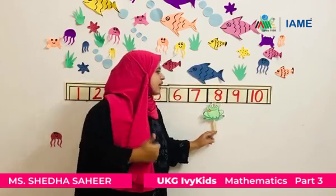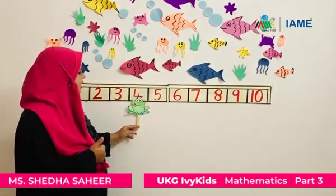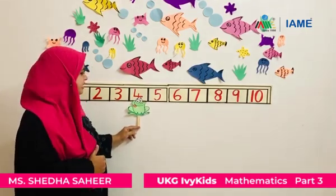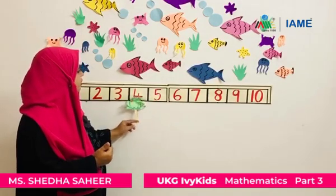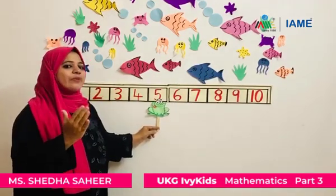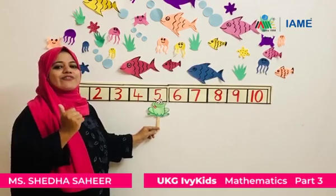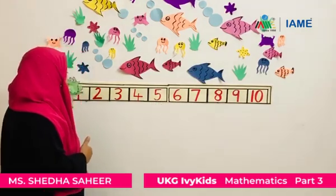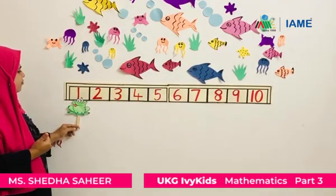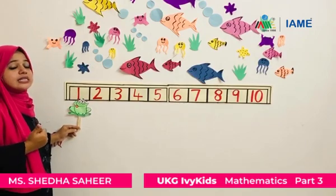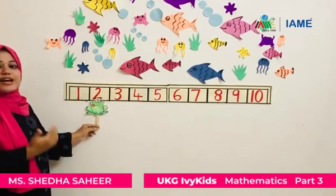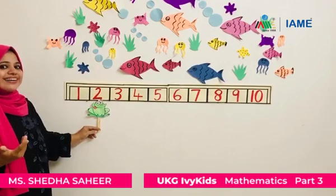Now the froggy is on number four. Froggy, tell me what number comes after four? Can you all help froggy? Froggy has jumped to number five. So which number comes after four? It's five. Very good. Now the froggy has jumped to number one — that's the first number. So tell me, what comes after one? Froggy is jumping — it's number two. So what comes after one? Two.